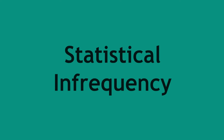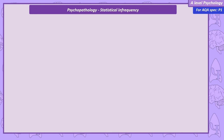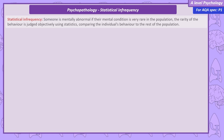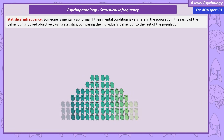Our first definition, statistical infrequency, is likely the most obvious. Someone is mentally abnormal if their mental condition is very rare in the population. How common or rare behaviour is can be judged objectively using statistics.